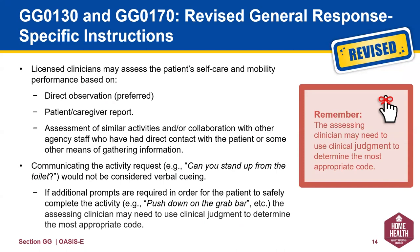Licensed clinicians may assess the patient's self-care and mobility performance based on direct observation, the preferred route, patient or caregiver report, the assessment of similar activities or collaboration with other agency staff who've had direct contact with the patient, or some other means of gathering the information. As you are observing an activity, remember to choose your words carefully so you do not provide verbal cueing for the activity. The example given here is the difference between asking if the patient can stand up from the seat versus saying 'push down on the grab bar.' Suggesting the patient push down on the grab bar is cueing. Remember, the assessing clinician may need to use clinical judgment to determine the most appropriate code.